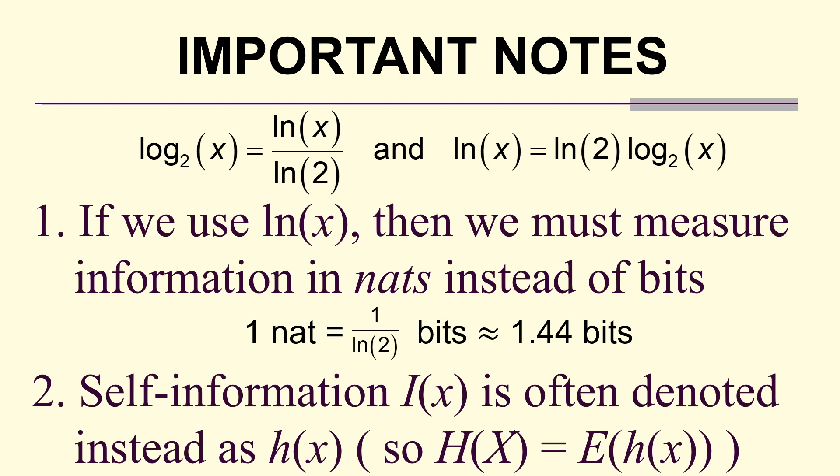Also, self-information i of x is often denoted instead as little h of x, and that's in correspondence with entropy — capital H of capital X — being the expected value of self-information, in this case little h of x.